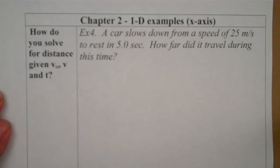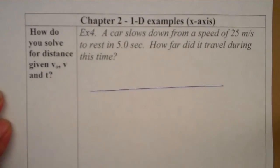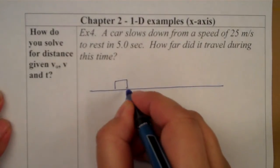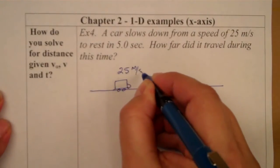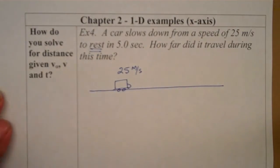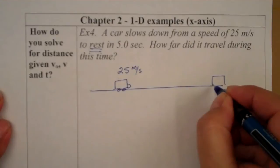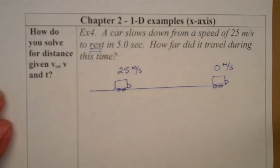This is example four. We're looking at one-dimensional motion along the x-axis. Our story is that we have a car that slows down from a speed of 25 meters per second to rest, meaning it comes to a complete stop so that its speed is 0 meters per second.